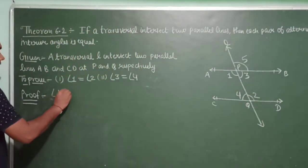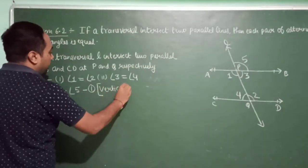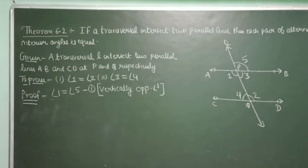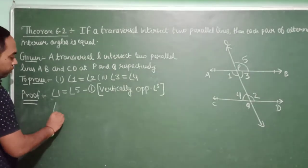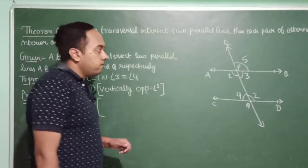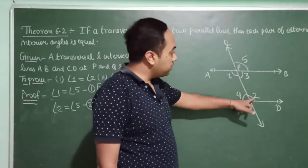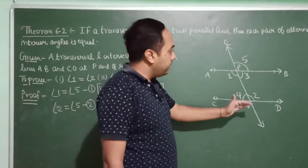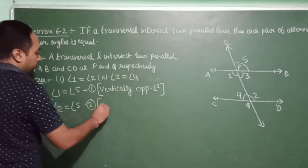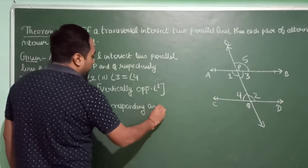Writing formally: Angle 1 is equal to angle 5 — this is equation 1 — reason: vertically opposite angles. Then angle 2 is equal to angle 5 — this is equation 2 — reason: corresponding angle axiom. This is because if a transversal intersects two parallel lines, and the lines are parallel, then each pair of corresponding angles are equal.